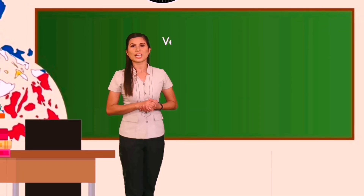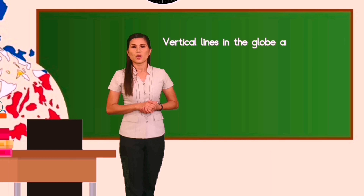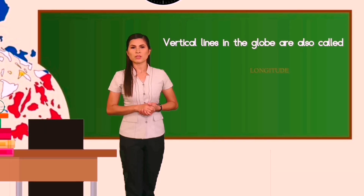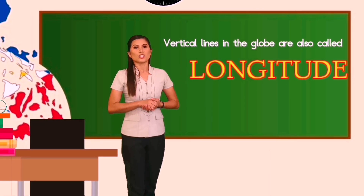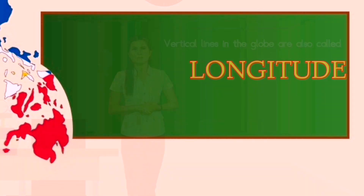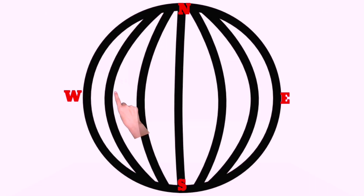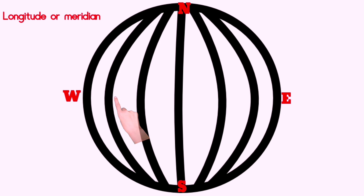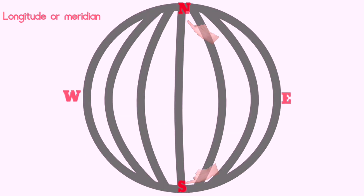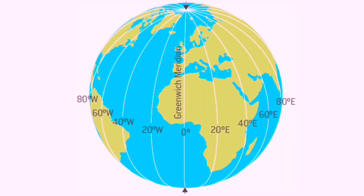Aside from the horizontal lines, there are also vertical lines, which are also called longitude. Lines of longitude, or meridians as they are also called, extend north and south and do not encircle the whole planet.